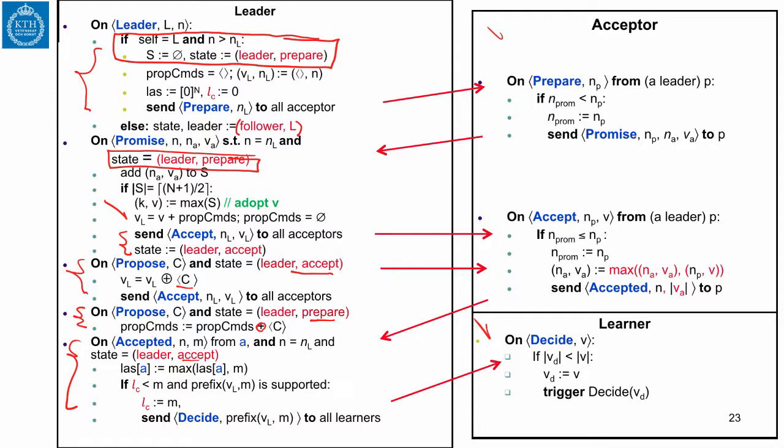This finishes the first version of the algorithm. We still have two problems. First, we are sending full sequences back and forth and need to get rid of that. Second, can we optimize this algorithm when the same process plays the role of proposer, acceptor, and learner? In that case, we can collapse the sequences VL, VA, and VT into a single one, avoiding redundancy.